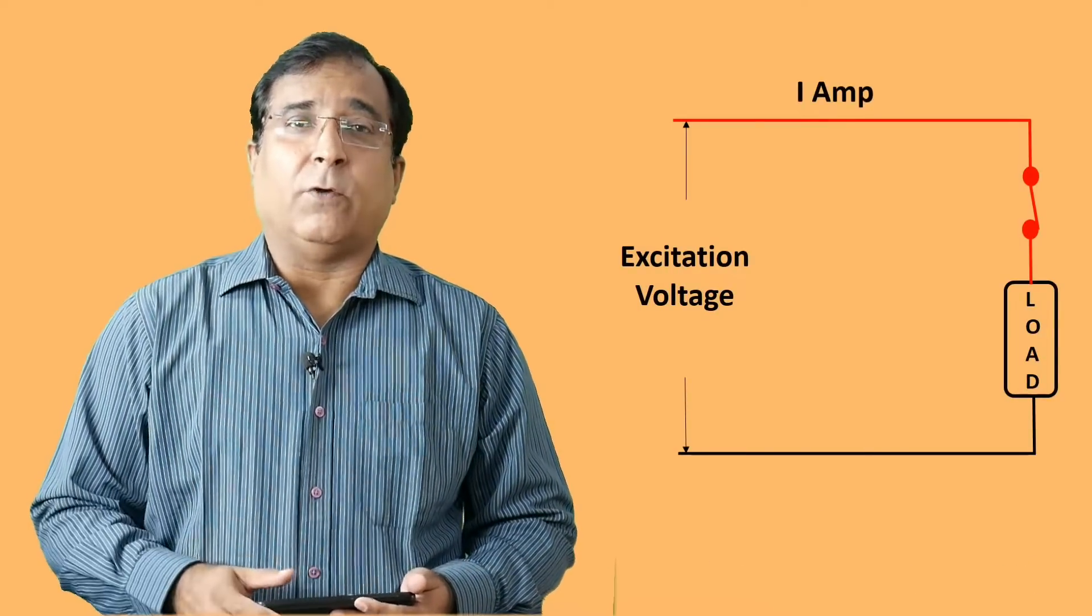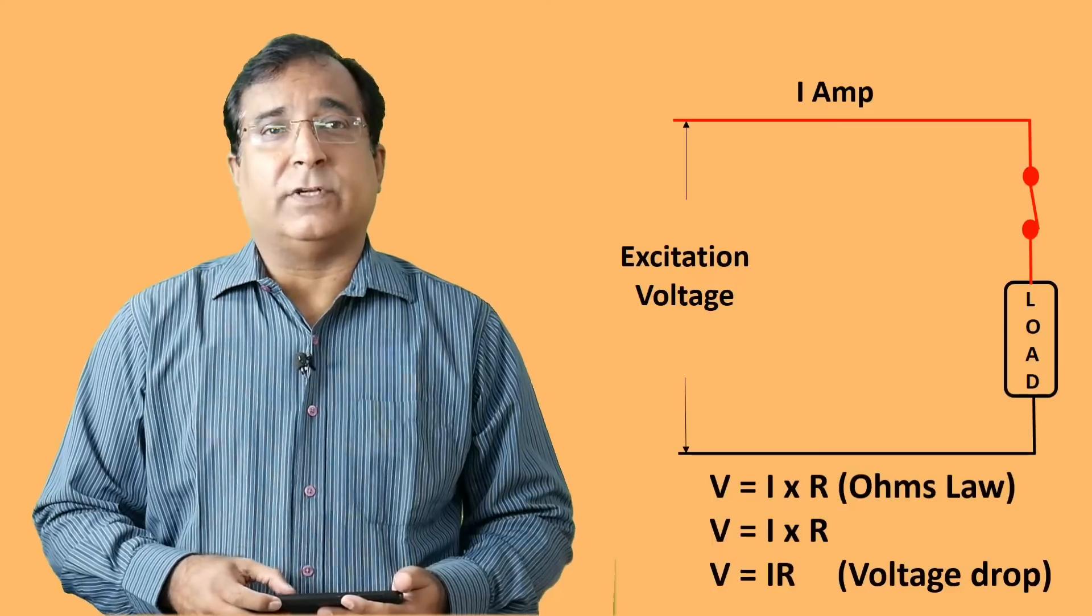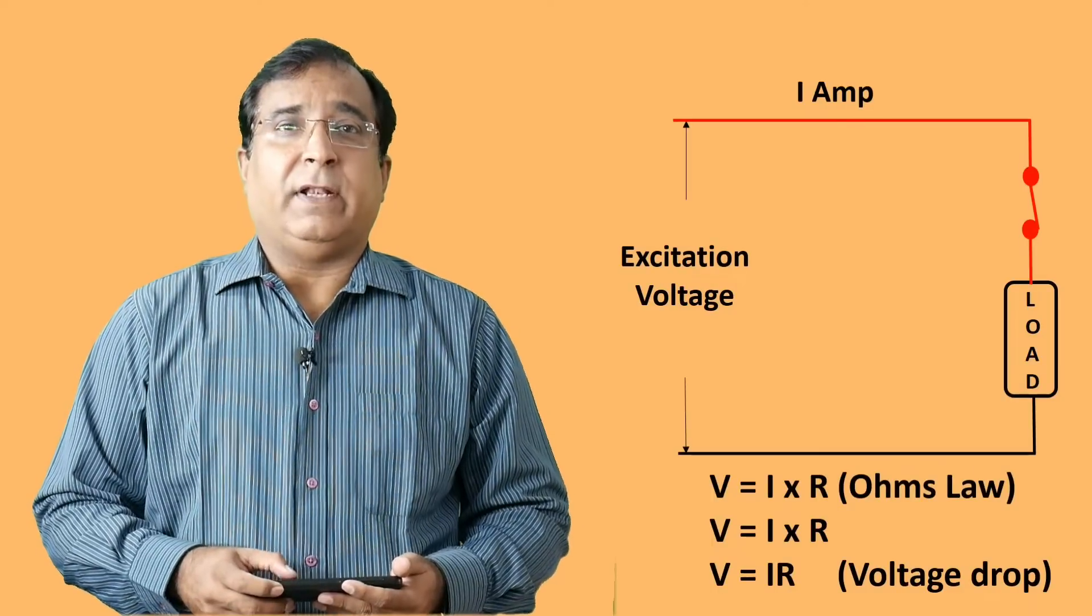As the current starts flowing, Ohm's law is applied here and it causes voltage drop. If the cable length from the load cell to the indicator is very short, then this voltage drop is not reflected in the measurement and can be compensated as fixed. That's why only 4 wire load cells are used in local machine.